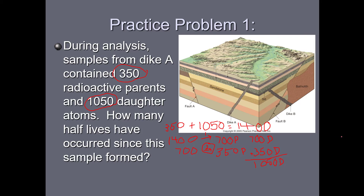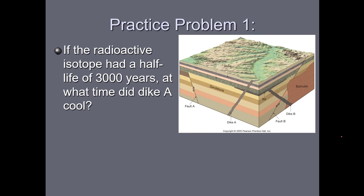For the second part: if the radioactive isotope has a half-life of 3000 years, at what time did dike A cool? We know there have been two half-lives, and there are 3000 years per half-life. So: 2 half-lives × 3000 years per half-life — the units cancel, giving us 6000 years. Dike A cooled 6000 years ago.